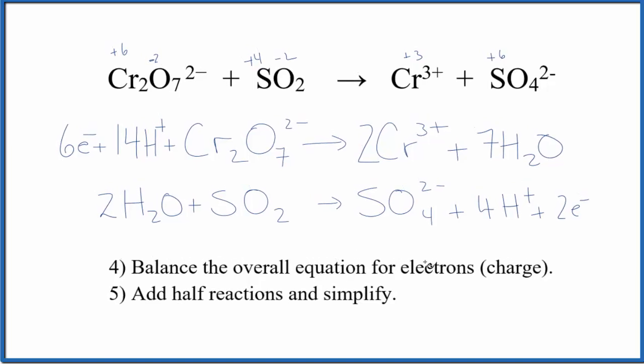We've done all that. At this point we need to balance the overall equation for electrons, so both of the half reactions. Because if you think about it, here in the reactants we have six electrons, and then over here, these are the products, we have two, so that's not balanced. We need to balance the electrons.